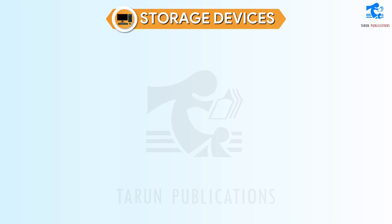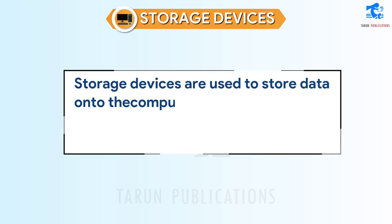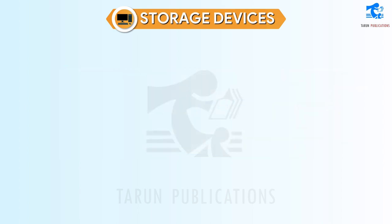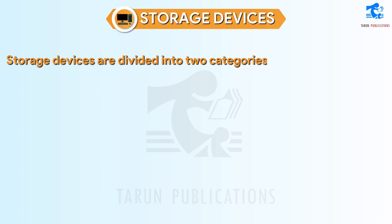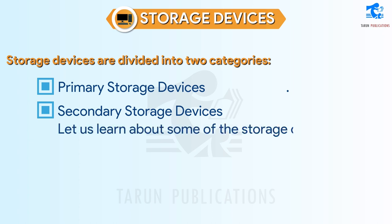Storage Devices: Storage devices are used to store data onto the computer. The computer uses many devices to store important data and information. Storage devices are divided into two categories: Primary Storage Devices and Secondary Storage Devices.